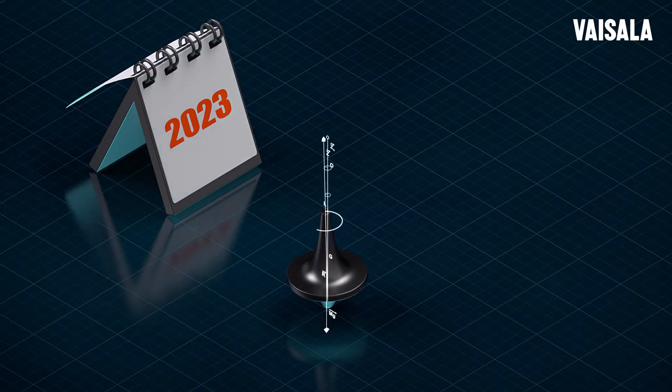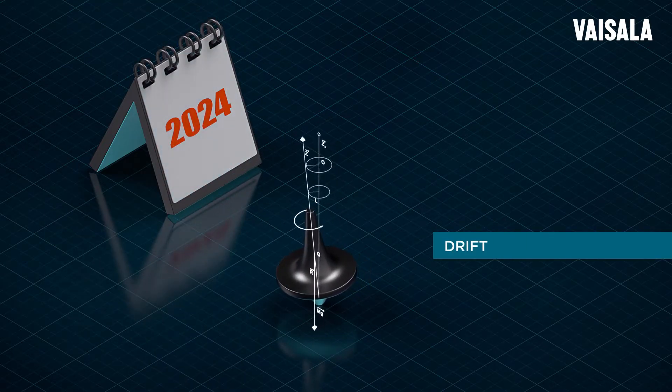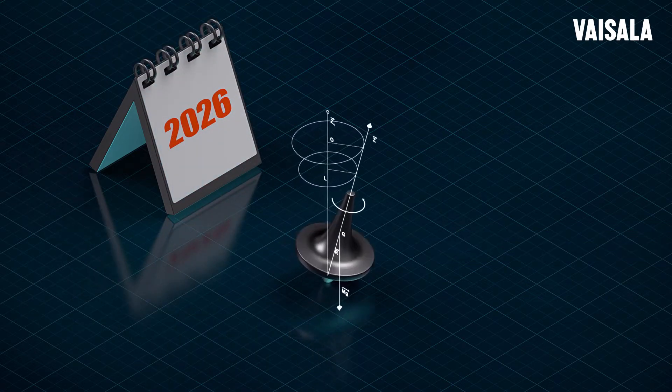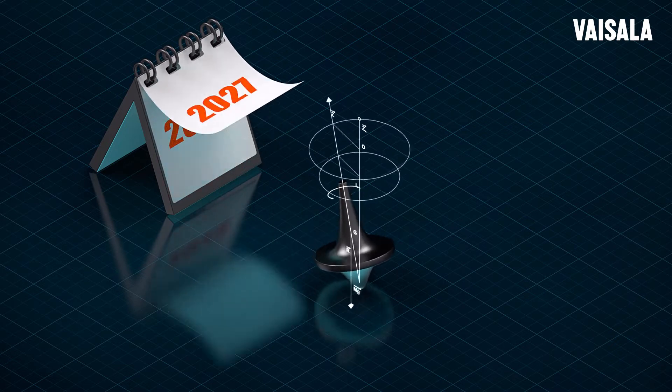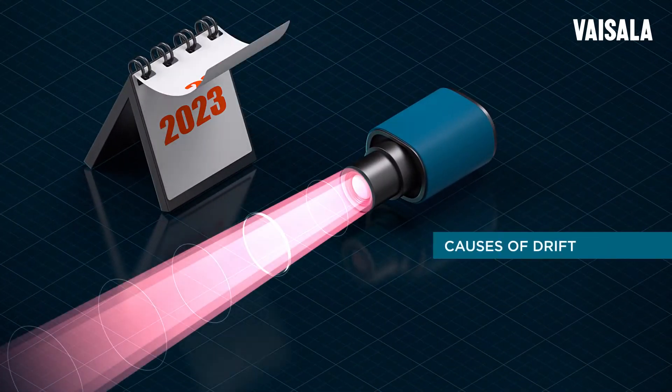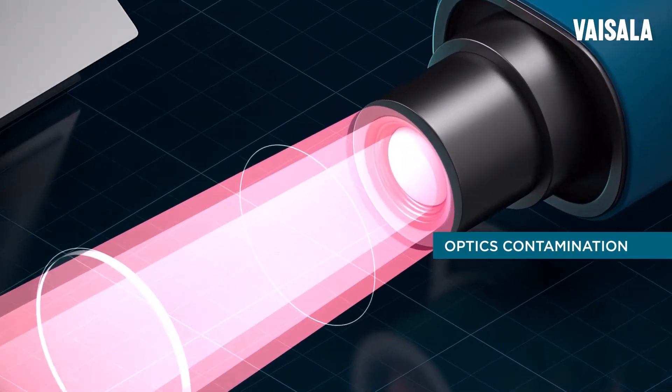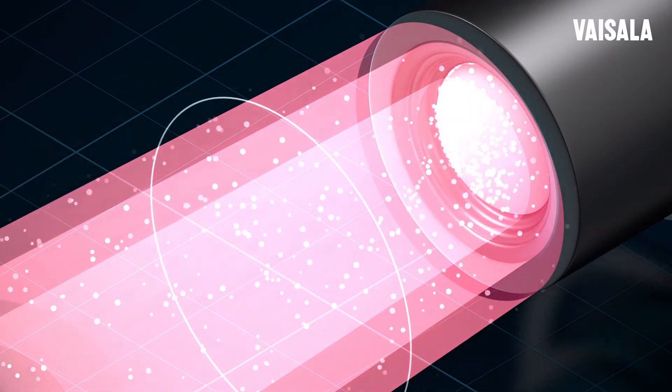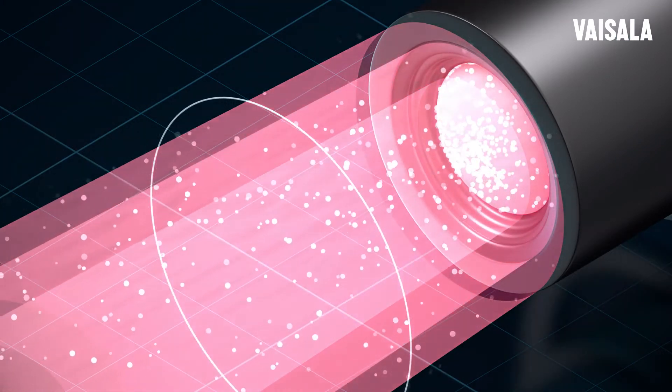The accuracy of measurement devices can decrease over time. This is known as drift. There's no measurement device on this planet that wouldn't measure differently on day one and when it's say 10 years old. In IR or infrared measurement, drift can be caused by optics contamination through dirt or dust, or the light source aging. Both cause the IR light to go dimmer over time.